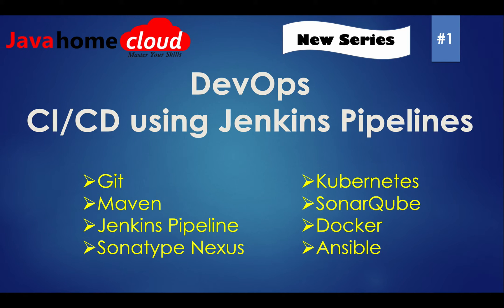The tools we'll use as part of this series are Git, Maven, Jenkins Pipeline — and it's going to be a declarative pipeline — and Sonatype Nexus for storing our artifacts.